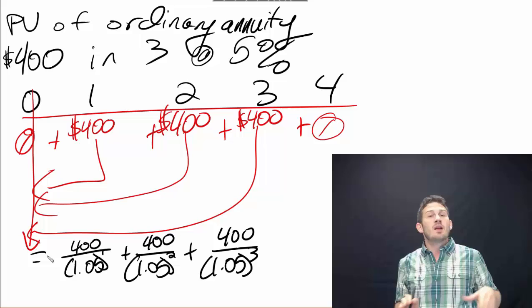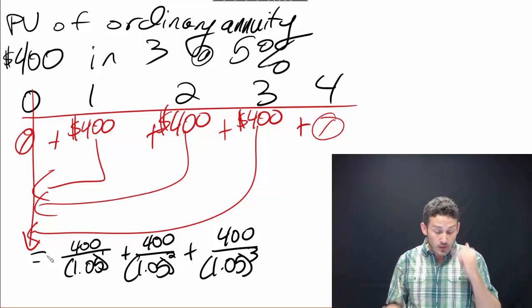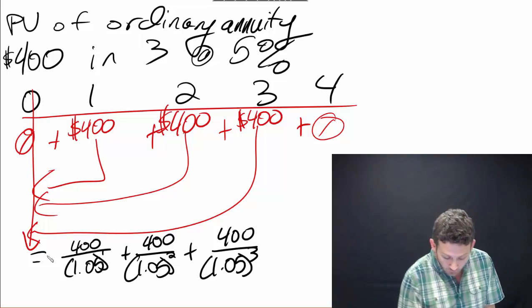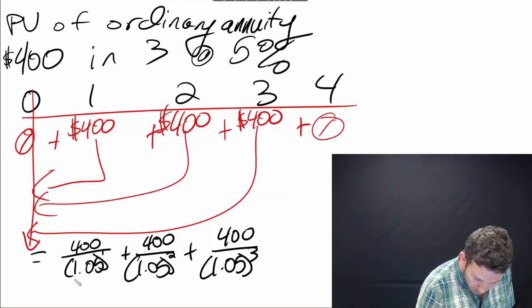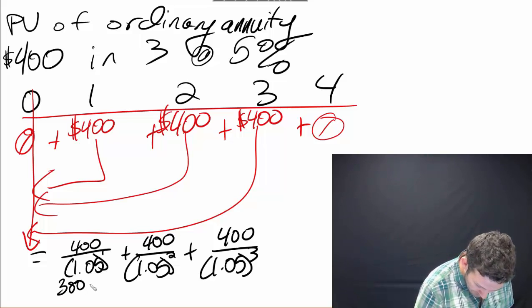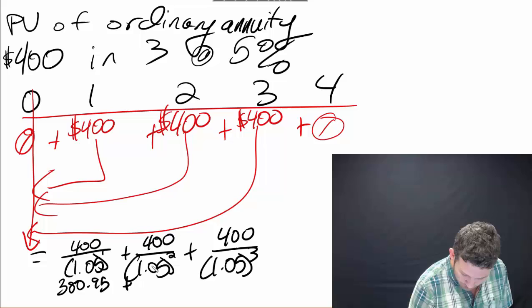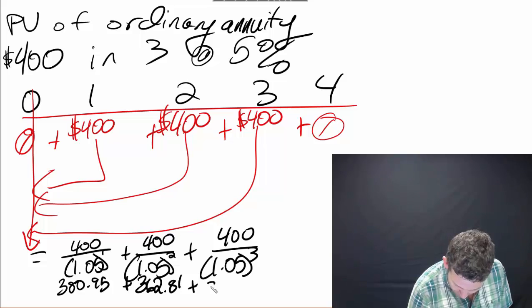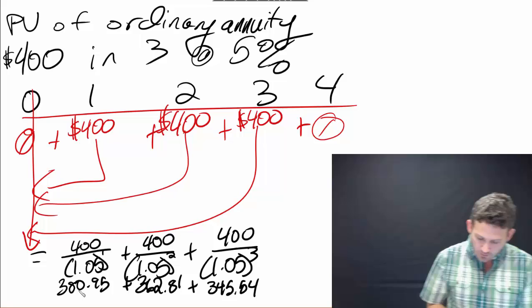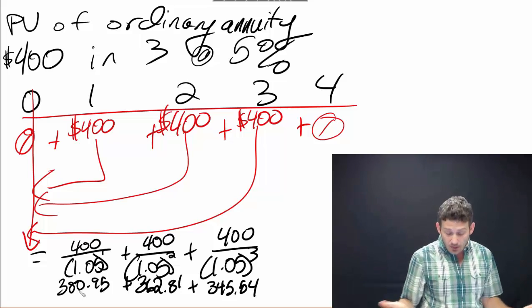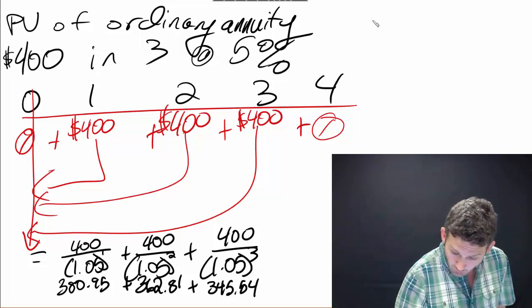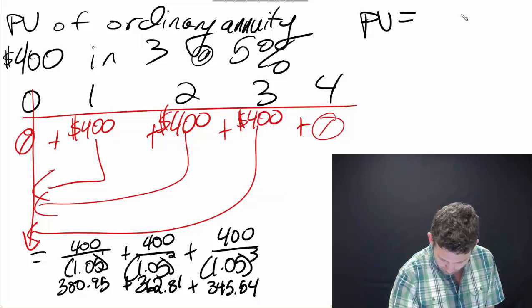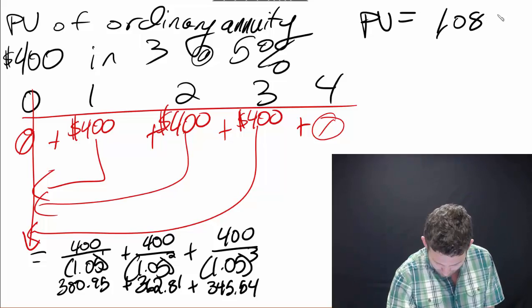So what we're going to do here is basically this is taking three different lump sum applications. When we add all these up, this payment in the first time period is going to be $380.95, the second period is going to be $362.81, and the third period is going to be $345.54. Then we add up these three lump sums and that tells us that our present value is going to be equal to $1,089.30.